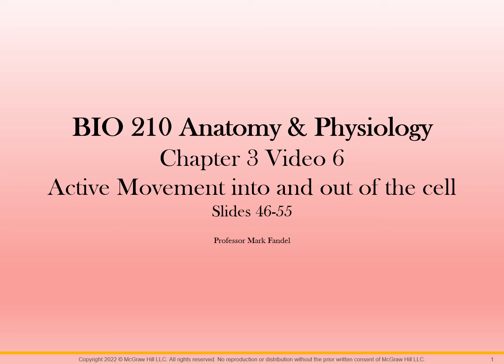We are now in video six of chapter three, looking at active movement into and out of the cell. As I explained in the previous video — video five — about passive movement, there are two types of descriptions for everything in the body determined on whether it needs energy to happen or not. Things that do not need energy are called passive processes. We looked at four passive movements: diffusion, facilitated diffusion, filtration, and osmosis. In this chapter, we're looking at active movement, which by definition means these are going to require energy — there's some cost to have them.